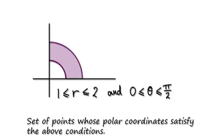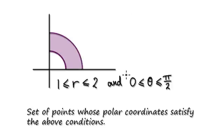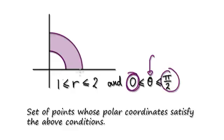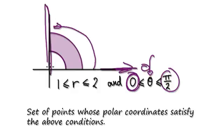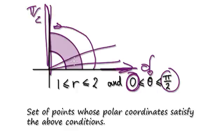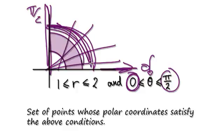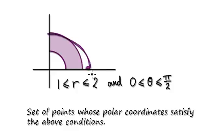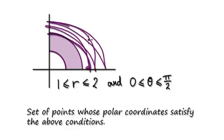Something else you should be aware of when it comes to polar coordinates: you can also have inequalities. For example, if you look at this here, the angle is somewhere in between zero and pi over two. The angle of zero would start here, and then pi over two would be here. So the angle could lie anywhere in between, moving back and forth somewhere in between zero and pi over two — it could be anywhere in this region.